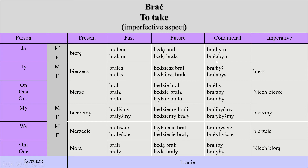So this is the conditional form — 'would', not 'will'. We would take, but we are girls, so 'brały' not 'brali'. The imperative form is always the same as the present form: 'bierz' — take, this is an order. You also have 'niech bierze' — let him take, and 'bierzcie' — you all take, and 'niech biorą' — let them take.